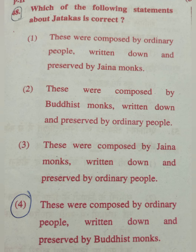Options for Q48: Option 1 — composed by ordinary people, written down and preserved by Jain monks. Option 2 — composed by Buddhist monks, written down and preserved by ordinary people. Option 3 — composed by Jain monks, preserved by ordinary people. Option 4 — composed by ordinary people, written down and preserved by Buddhist monks. The correct answer is option 4.